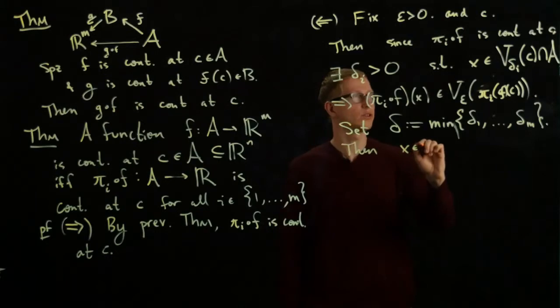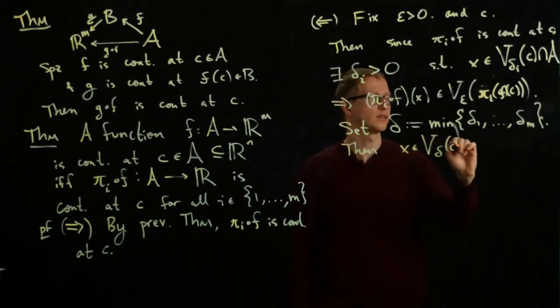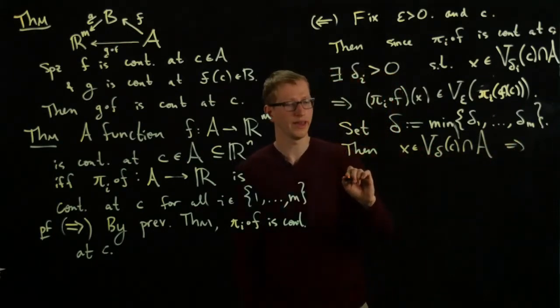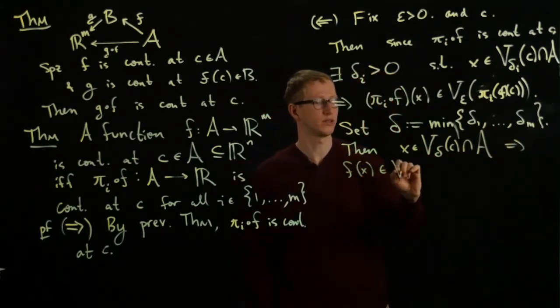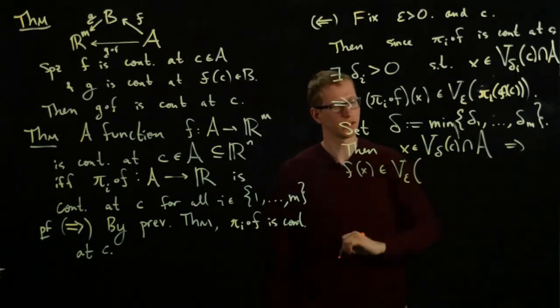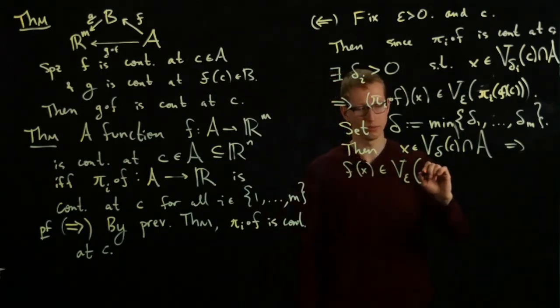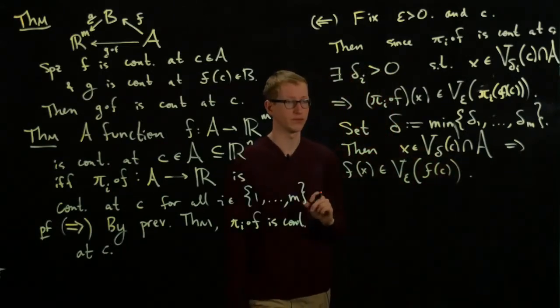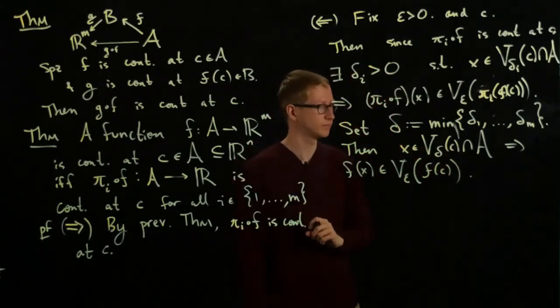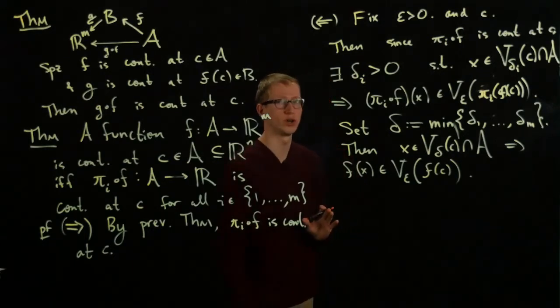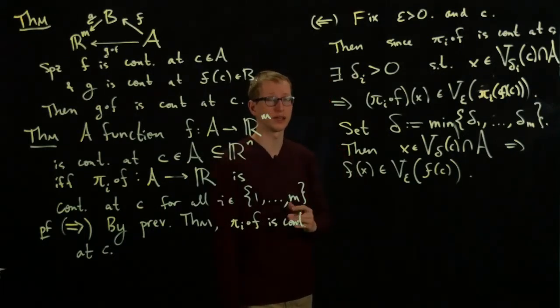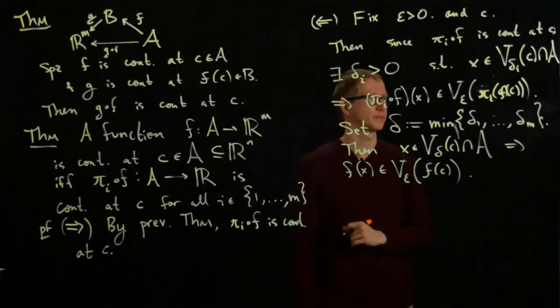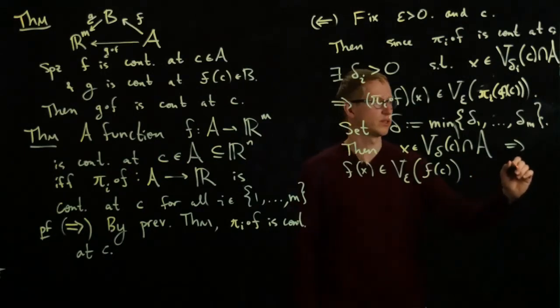Then X is in the domain V_delta(C) intersect with A implies that F of X is actually in the domain around the image of C. And I highly suggest to draw a picture for this. Analogous to other pictures that we've drawn, for instance, in the nested rectangle video, look at a couple of rectangles and see to make sure that this works. So that's actually the end of the proof.